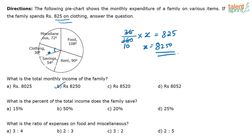Next question. What is the percentage of the total income does the family save? The family is saving 54 degrees out of 360 degrees, so this is 15 percentage. 15 percentage of the total income the family is saving.